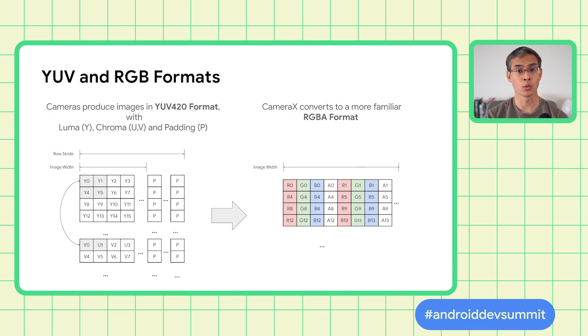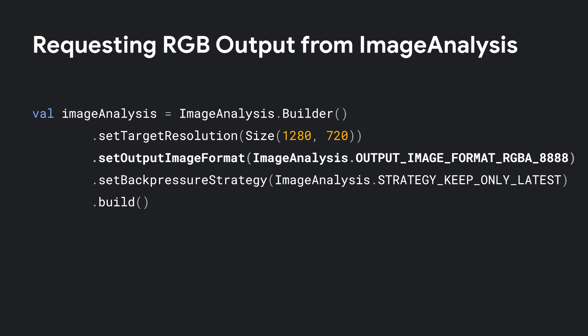Cameras typically produce data in a YUV 420 format, consisting of a luminance plane Y, chroma values U and V, and some padding bytes to align rows with efficient memory strides. However, this format can be difficult to work with when processing images. CameraX can now convert the output of image analysis to the more familiar RGBA format for easier processing. This code creates an image analysis use case specifying a desired resolution and a backpressure strategy for the buffer of images. The new setOutputImageFormat method can now be called to request output in RGBA 8888 format, so image analysis will output frames with RGBA 8888 data instead of YUV.